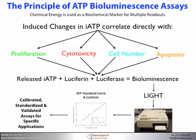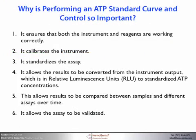There are several reasons for calibration. It ensures that both the instrument and reagents are working correctly. It calibrates the instrument and standardizes the assay. It allows the results to be converted from the instrument output, which is in relative luminescent units (RLUs), to standardized ATP concentrations. This allows results to be compared between samples and different assays over time, and also allows for assay validation. At Hemogenics, we believe that calibrating and standardizing an assay is one of the most important procedures you can perform to ensure that you are getting the best results.